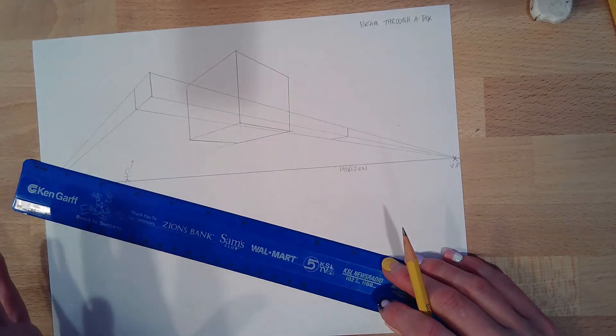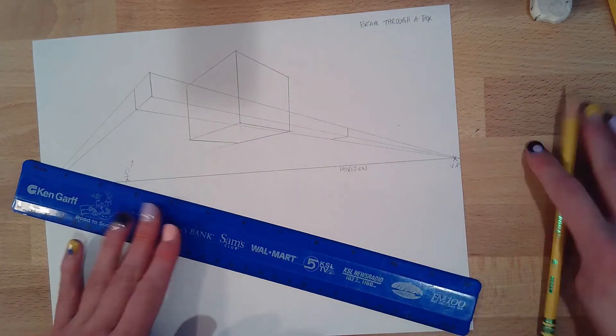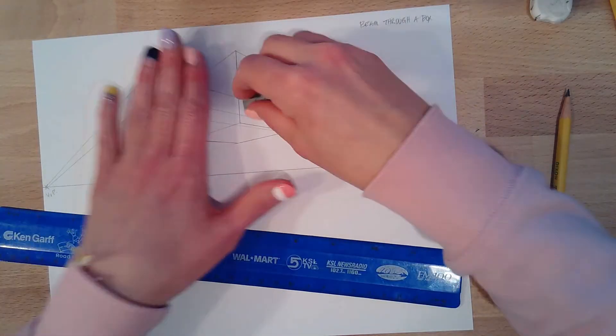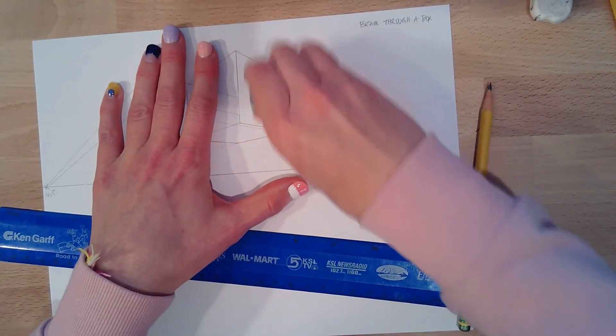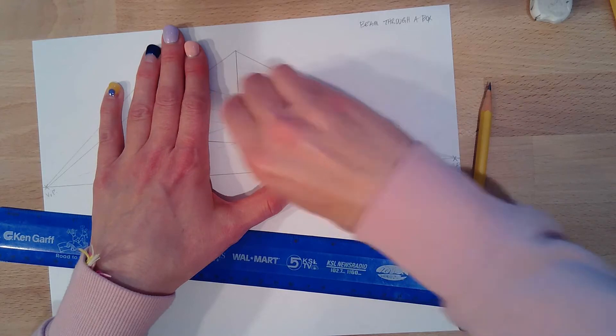So now it's just a little bit messy. We need to do some erasing. This isn't going to make any sense. So I'm going to erase the back side lines.